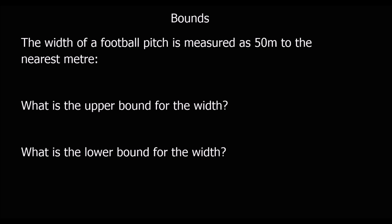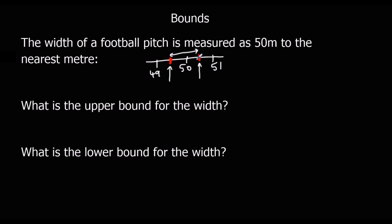When we measure, we round things. The width of a football pitch is measured as 50 meters to the nearest meter. The next one up was 51, the next one down was 49. So it's closer to 50 than 49, and closer to 50 than 51. The actual measurement is somewhere in a range — the upper bound is 50.5 meters and the lower bound is 49.5 meters.